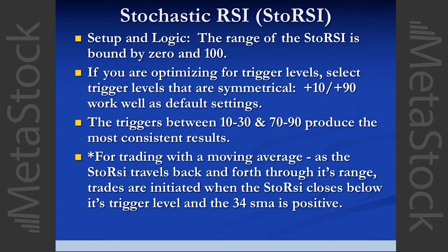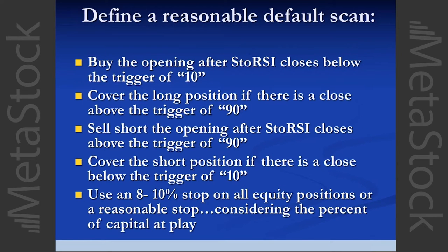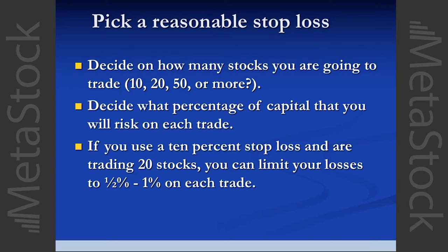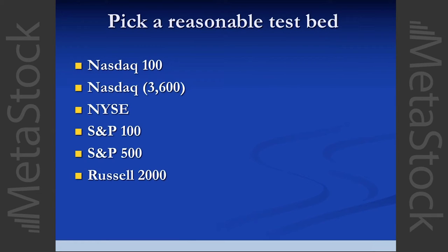There are also templates in there for trading only with the trend direction, so you only take trades in the direction of the trend. For momentum, you need a higher win ratio than trend — I look for around 70% or so — and a higher average win-to-loss ratio. Pick a reasonable stop loss of 8 or 10%, then pick your test bed. I take issues from the NASDAQ 100 and go through every month to pick the 20 that I like to trade.